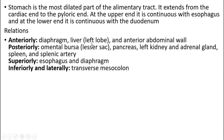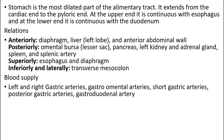Anteriorly: the diaphragm, liver, the left lobe of the liver, and the anterior abdominal wall. Posteriorly: the omental bursa (lesser sac), pancreas, left kidney and adrenal gland, spleen, and splenic artery. Superiorly: the esophagus and diaphragm. Inferiorly and laterally: the transverse mesocolon.